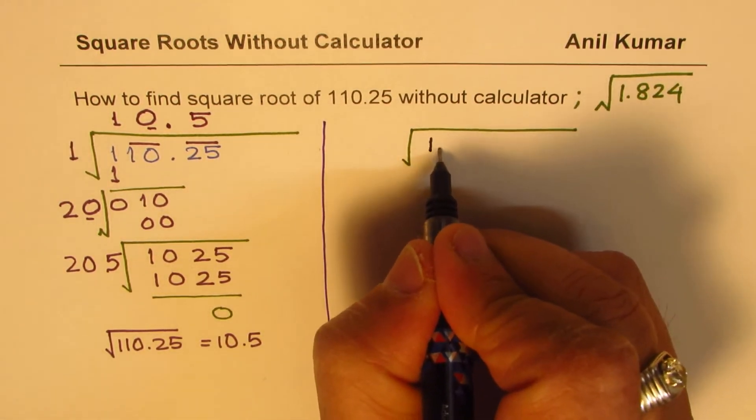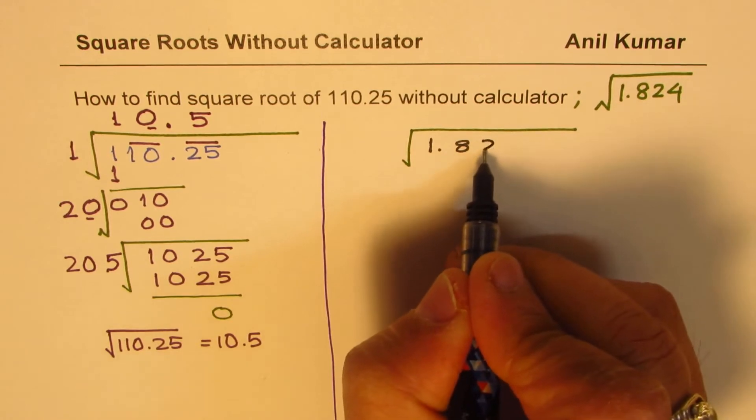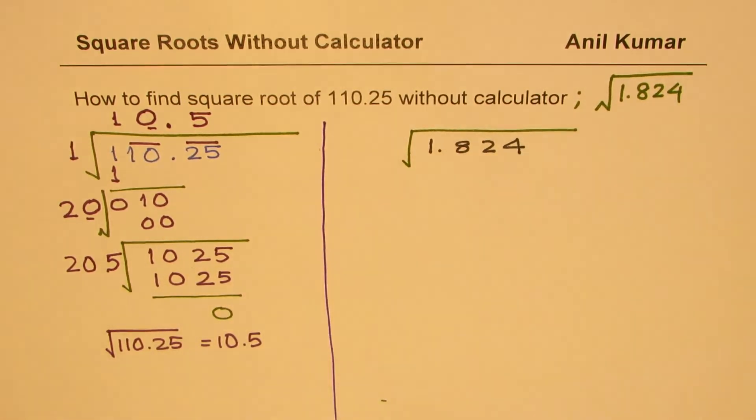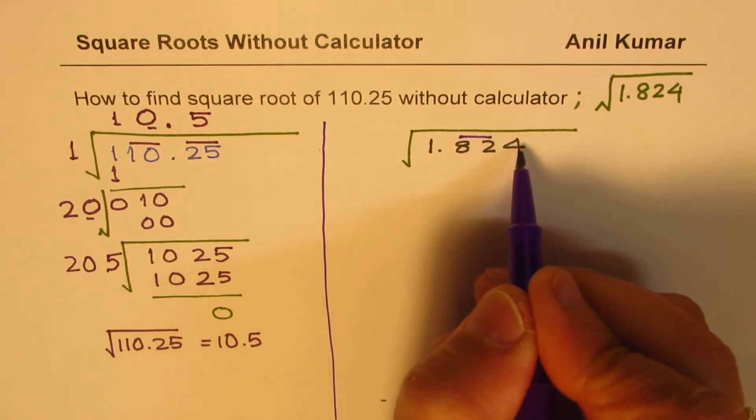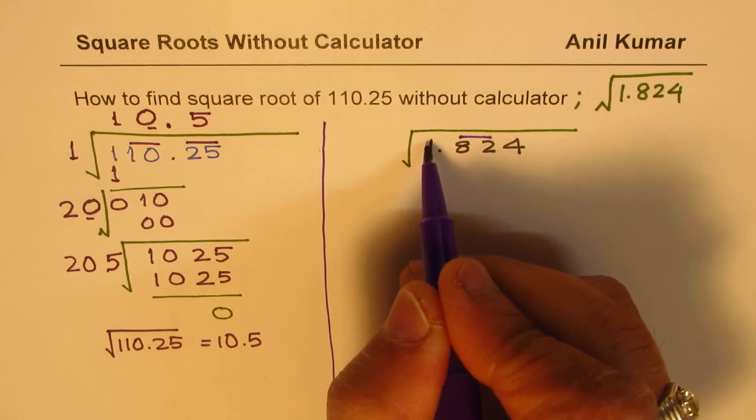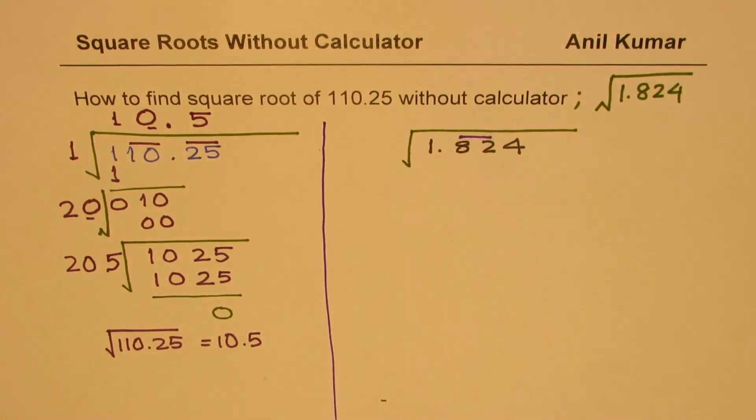So first step is to make sets of 2s starting from the decimal point. So sets of 2s will mean from decimal, right side we got 8.2, 4 is left. On the left side, 1 is left. There is only one number.